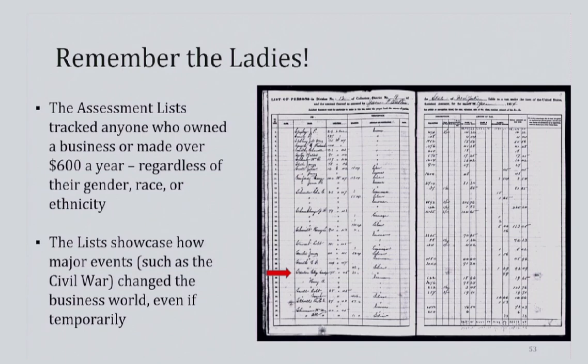Women may be less represented on these lists, but the assessment list tracked anyone who owned a business or made over $600 a year, regardless of their gender. Here is suffragist and speaker Elizabeth Cady Stanton on the list for New York. The list showcases how major events such as the Civil War changed the business world, even if temporarily. During the Civil War, when the men were off fighting, women held down many of the jobs, the farms, and the shops, and they are represented as doing so in these lists.